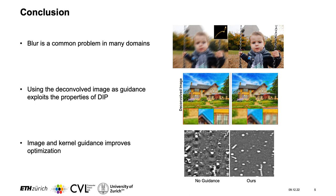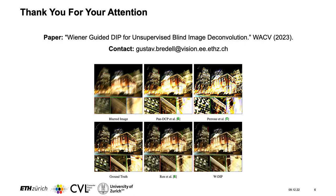To conclude, blur is a common problem in many domains. Using a deconvolved image as guidance exploits the property of DIP and can be very useful for blind image deconvolution. Lastly, image and kernel guidance improves the optimization. Thank you very much for your attention.